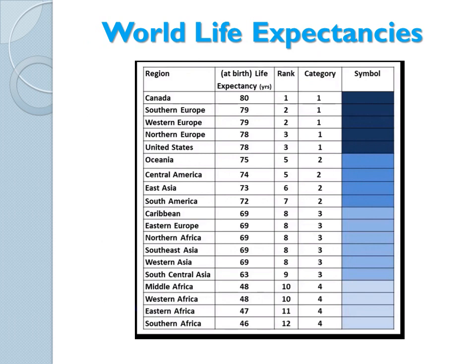Chloropleth maps are an easy way to visualize a single category of data over an area. The first step is to organize all of our data into a table, and then arrange it from highest to lowest. We then assign shading categories for data ranges. Here you can see that the US, Canada, and Northwest and Southern Europe fall into the highest category of data, and therefore shine the darkest shading. The majority of Africa falls into the lowest category, and thus gets the lightest coloring.